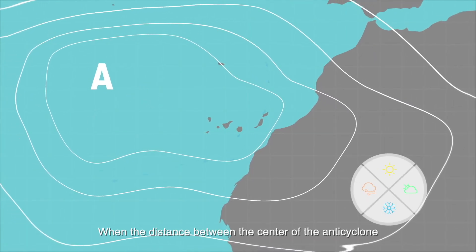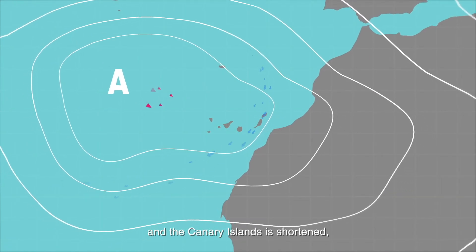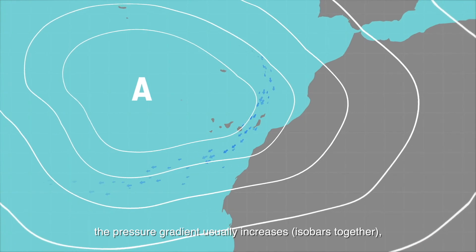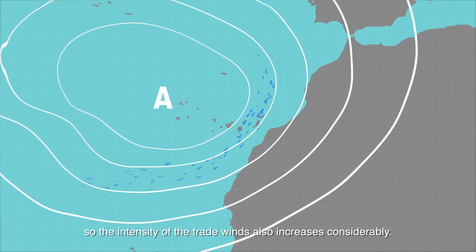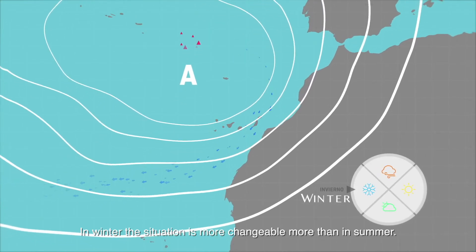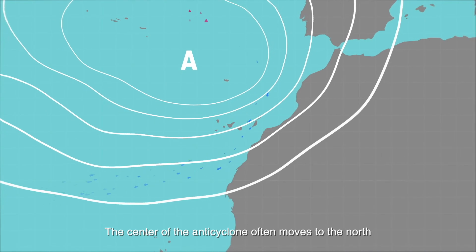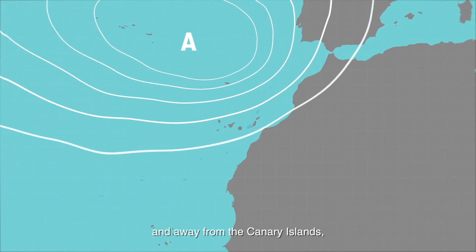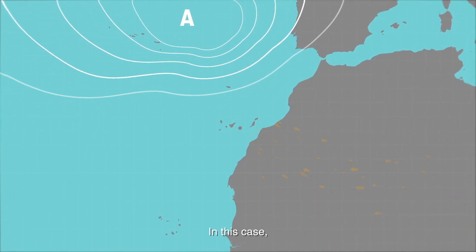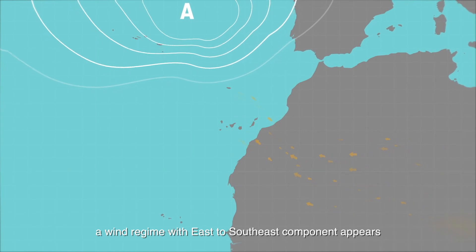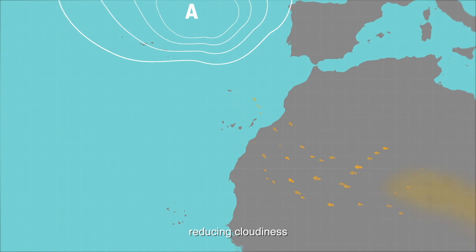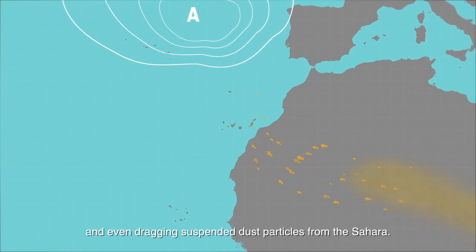When the distance between the center of the anticyclone and the Canary Islands is shortened, the pressure gradient usually increases, with the isobars being closer together, so the intensity of the trade winds also increases considerably. In winter the situation is more changeable than in summer. The center of the anticyclone often moves to the north and away from the Canary Islands, thereby leaving the islands to the south of the high pressure. In this case, a wind regime with an east to southeast component appears, weakening the trade winds.